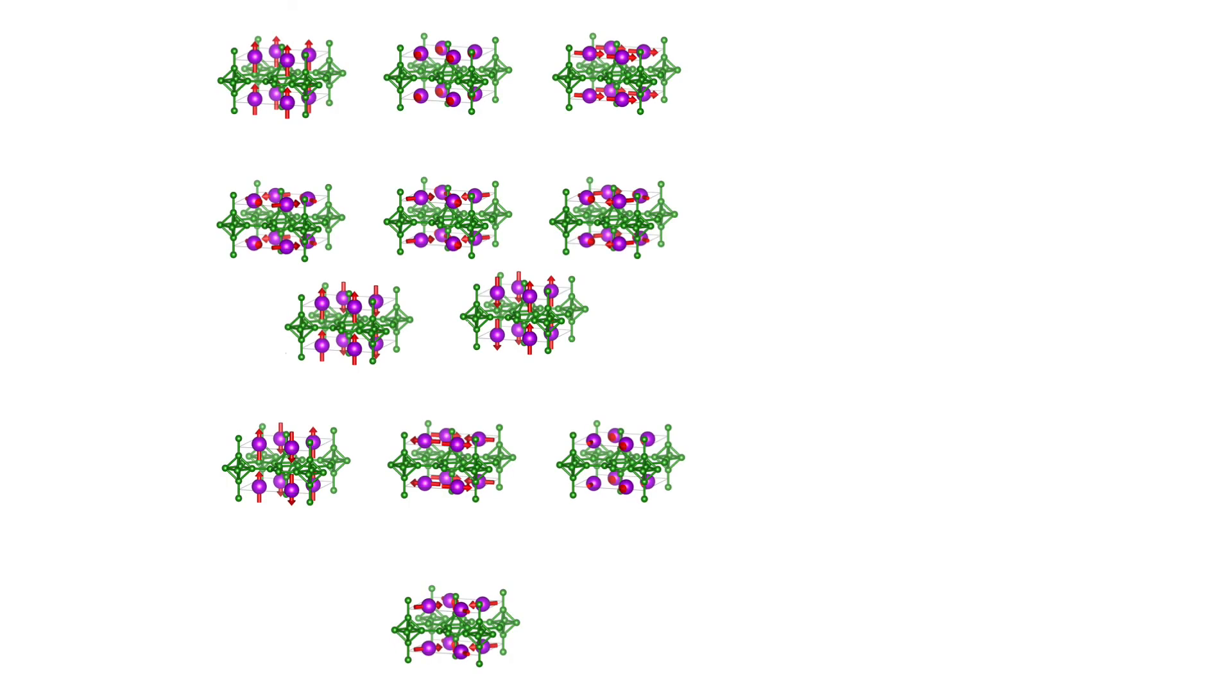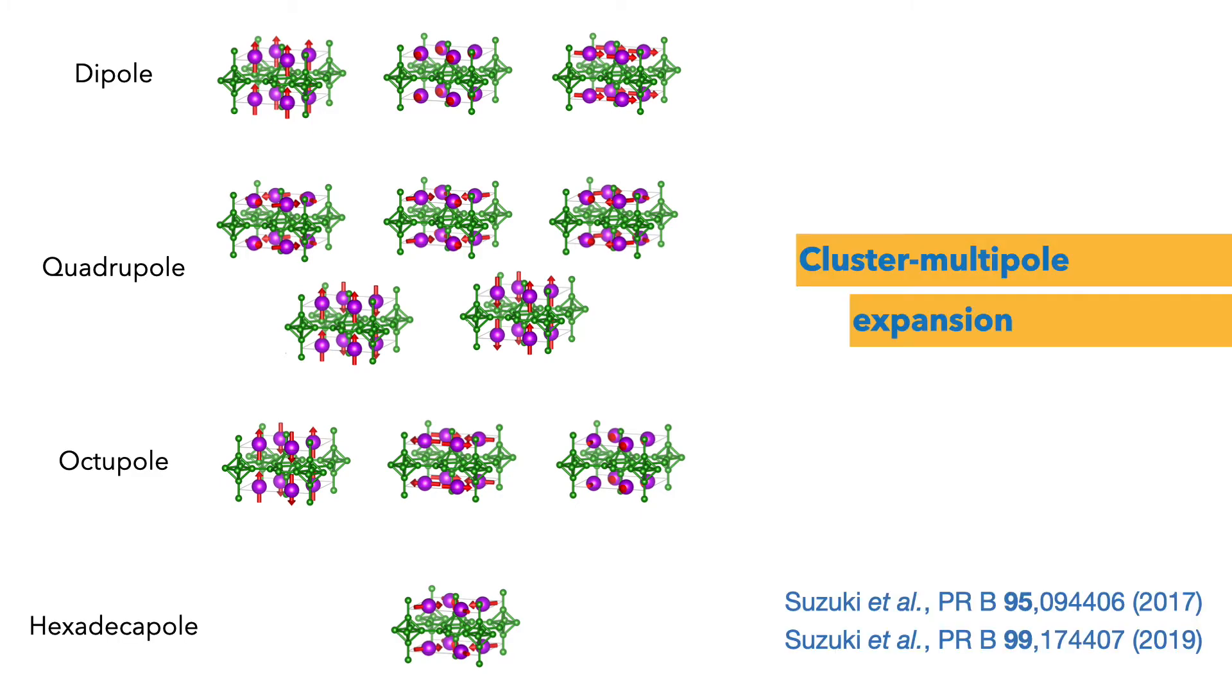The idea is that all common magnetic structures are based on few special ones, like the magnetic dipole, quadrupole, octupole, and so on. This expansion is called cluster multipole expansion, because always a cluster of magnetic moments is seen as one configuration forming a multipole.